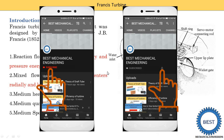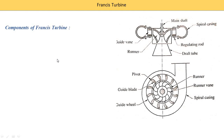Next, we understand the various components of the Francis turbine. Before that, let me show you this image. The upper part is a front view of the Francis turbine and this is the top view. When you see the Francis turbine from the top, it looks like a circular portion. There are various components, so first we will know the names, then go into detail.